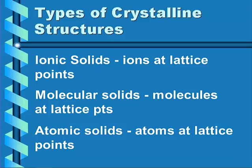There are three types of crystalline structures or solids: ionic, molecular, and atomic. Ionic solids have ions at the lattice points. Molecular solids have molecules at the lattice points. And atomic solids have atoms at the lattice points.